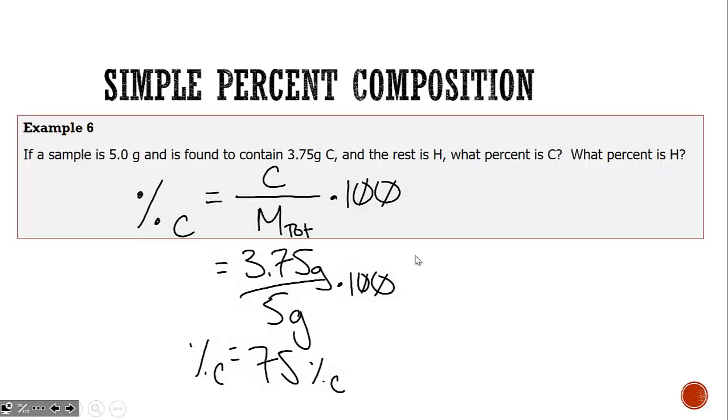Percentages are a part of a total, that total being 100. To find the percent hydrogen, we subtract the percent carbon from 100 to find that this compound is 25% hydrogen.